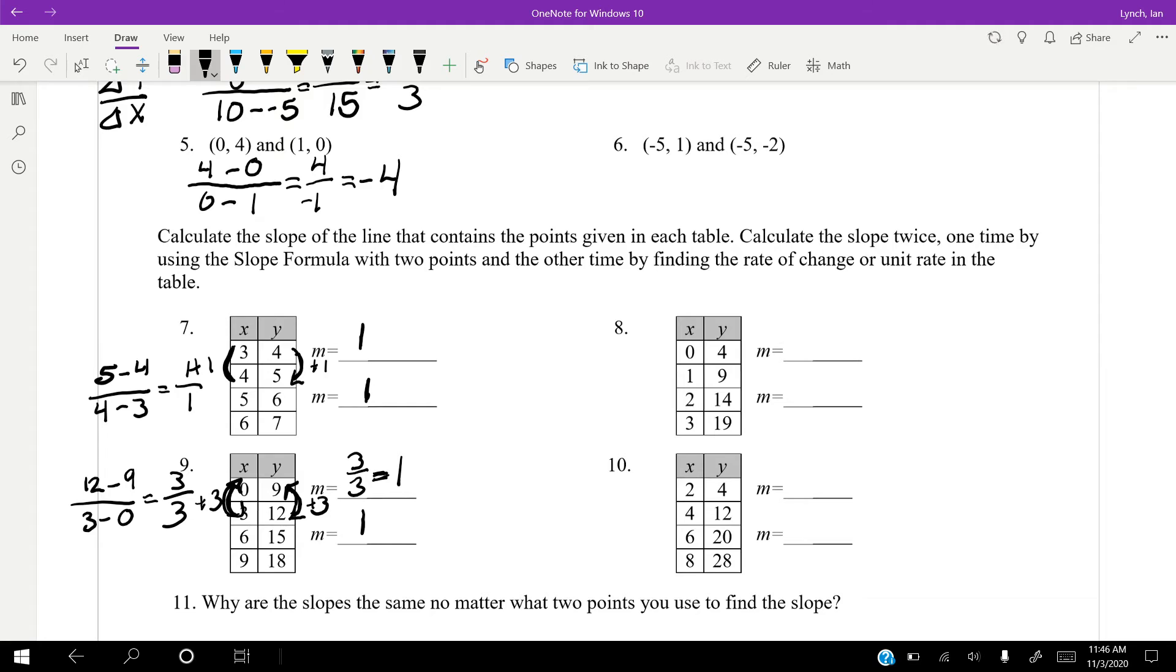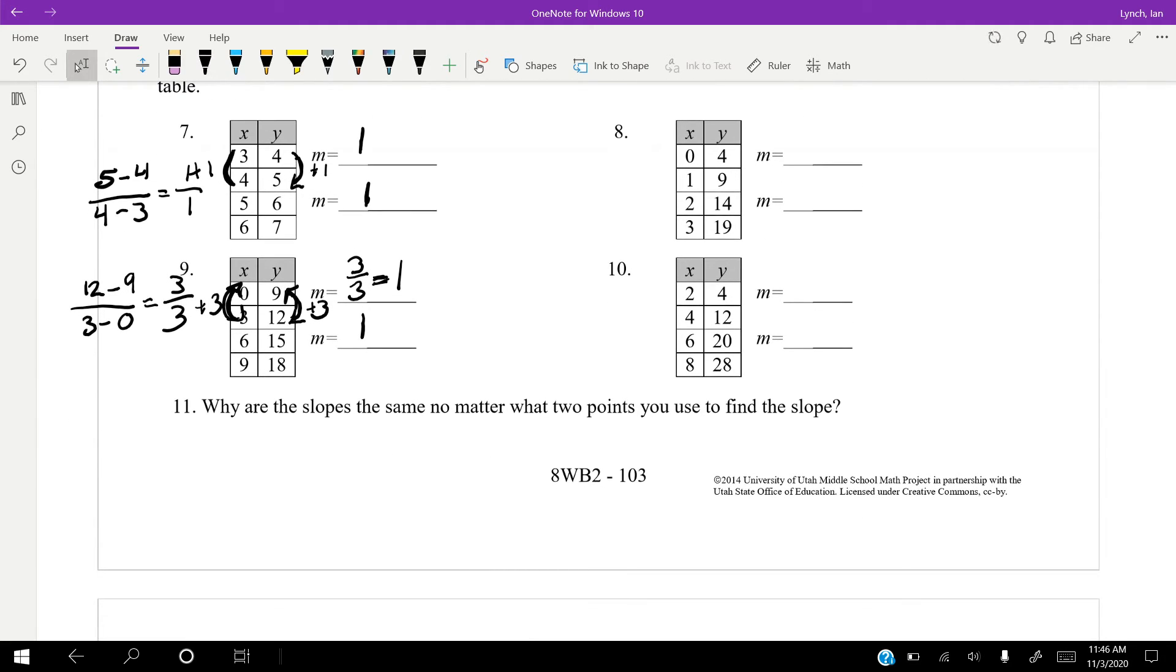So I'll let you guys answer this question on your own. Why are the slopes the same no matter what two points you use to find the slope? Can you guys think about that? All right, so now that you guys are back and you guys have thought about it, if you didn't think about it, go think about it. The slopes, why are they the same no matter what two points you use to find it on specific lines?